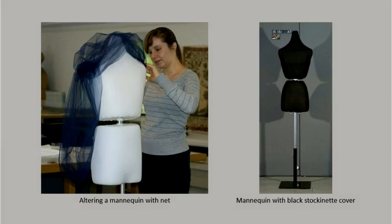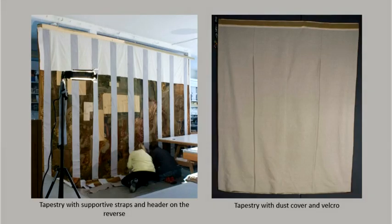Particularly heavy and delicate textiles can be supported with fabric headers or straps on the reverse to help distribute weight. Textiles with open backs like tapestries can also benefit from dust covers or added lining to protect the piece from particulate matter and abrasion.